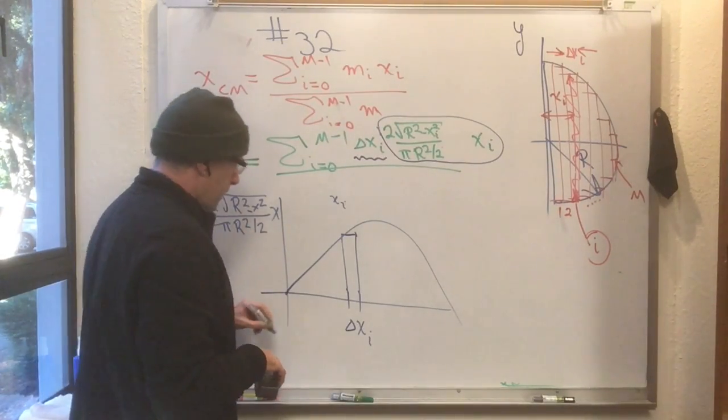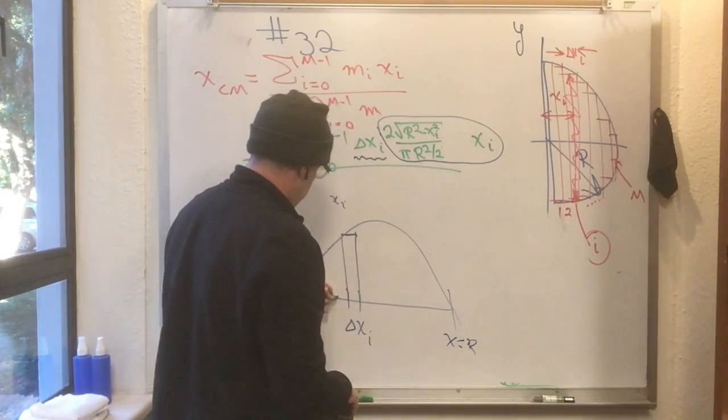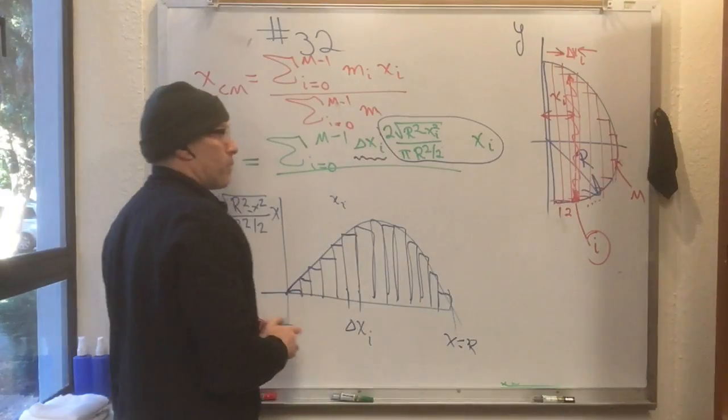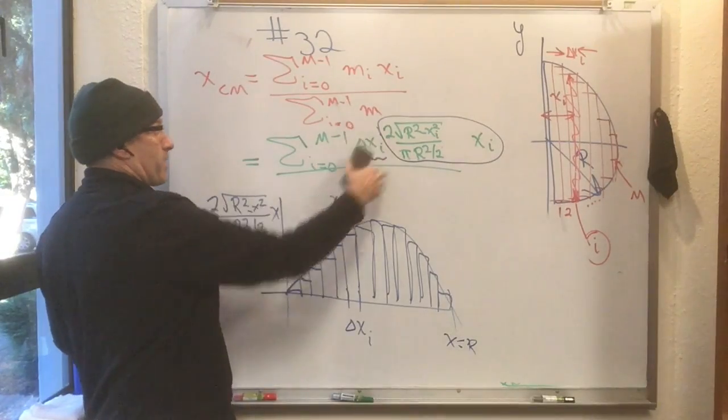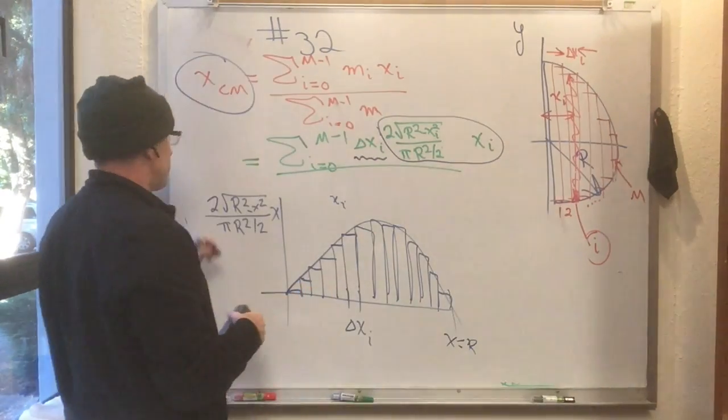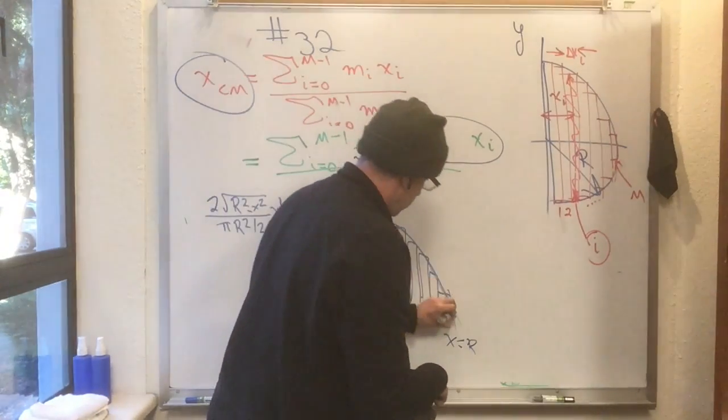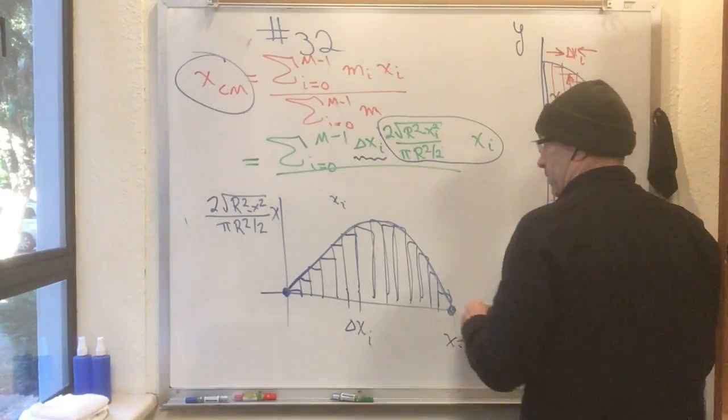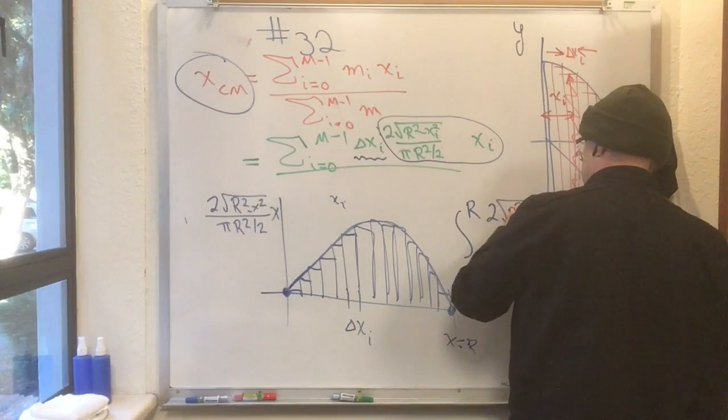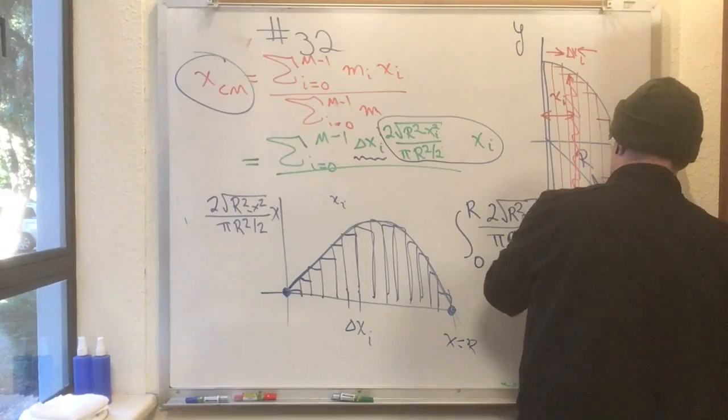It starts off linearly, by the way, and it crashes back down to 0 at x equals r, which is, by the way, exactly where we stop adding strips. So, what we're actually computing is this area. Now, as we make the number of strips here more and more, that is, as we make them narrower and narrower, this thing that we have to calculate here becomes a more and more accurate approximation to the thing that we're trying to calculate, x_cm. Meanwhile, this thing here becomes more and more accurate approximation to the area under this curve. Now, mathematicians have a symbol for the area under this curve. This is the integral 0 to r of this function, 2 root r squared minus x squared over pi r squared over 2 times x dx. That's their symbol for this thing.